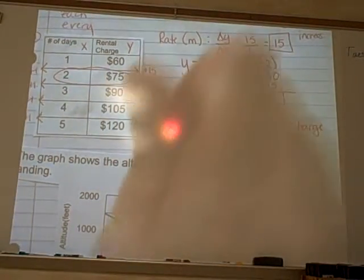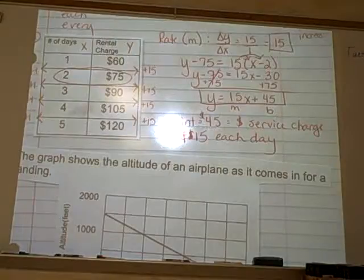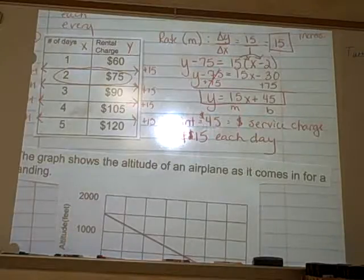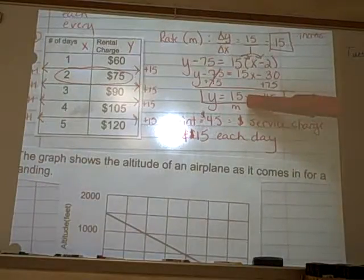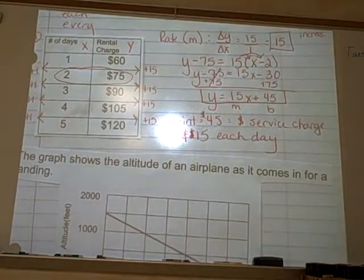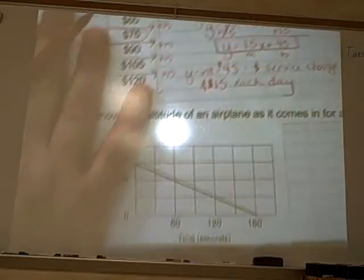So that's the same thing here — $45 service charge, $15 a day. If I asked you how much it would cost to have this car for 20 days, you'd multiply 15 times 20, get a number, and then add 45. That's exactly the equation: 15 times whatever your number is, plus 45. That math equation explains the situation — that's really all algebra is.